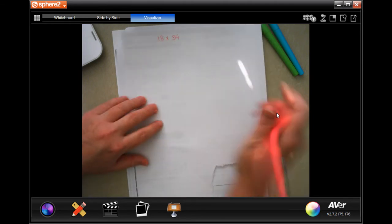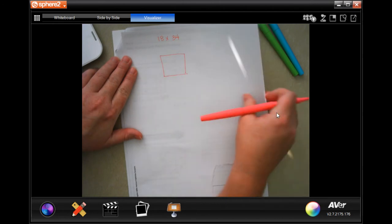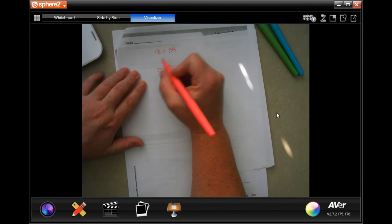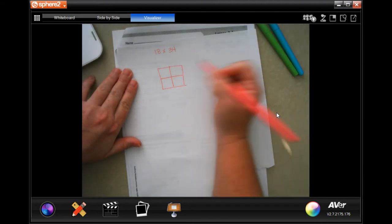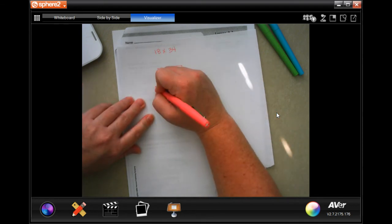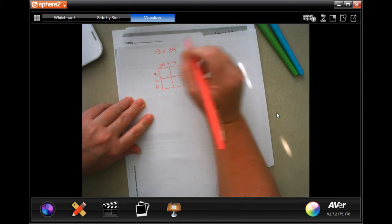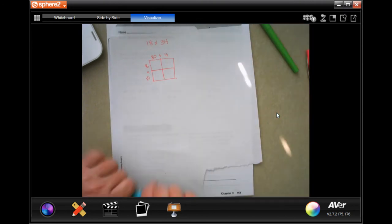I'm gonna draw my box. Now, I know that they put different sizes of boxes. You don't have to. It doesn't matter. So we're going to split it up into 4 this time instead of into 2 because we have 18 is 10 plus 8 and 34 is 30 plus 4. So now we can go ahead and get started.